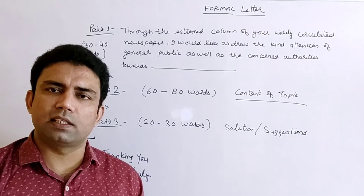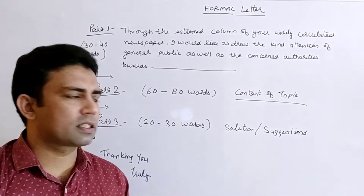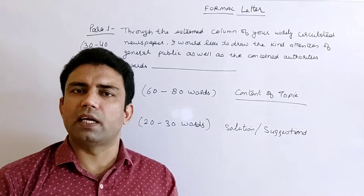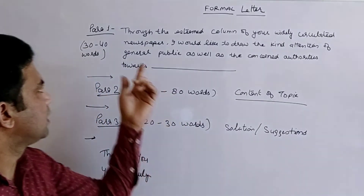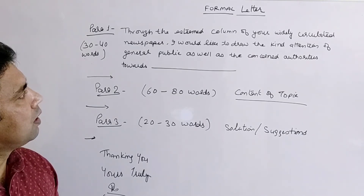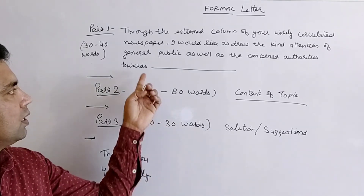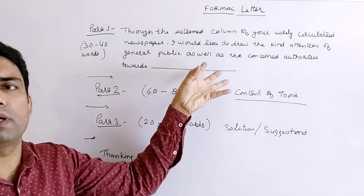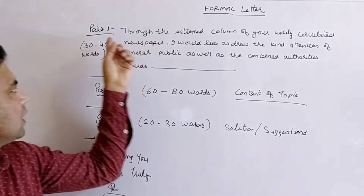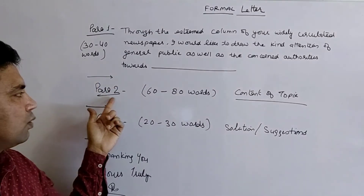Now let's come to paragraph one. In the first paragraph we introduce ourselves and state our motive — why we are writing the letter. For a letter to the editor, you can write: 'Through the esteemed columns of your widely circulated newspaper, I would like to draw the kind attention of the general public as well as the concerned authorities towards...' — then insert your topic. The first paragraph should be approximately 30 to 40 words.